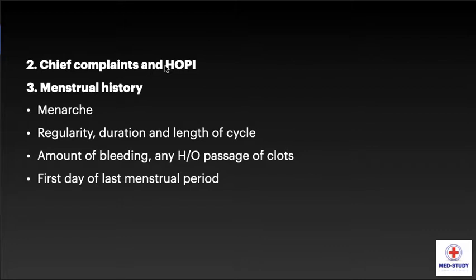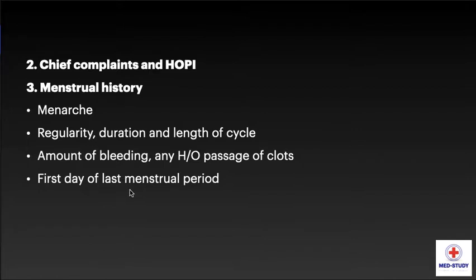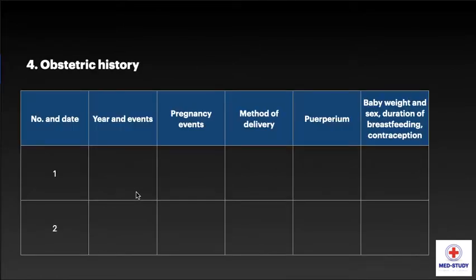Now going to menstrual history. First is menarche, that is the age of onset of menses. You have to know the regularity, duration, and length of the cycle, the amount of bleeding, any history of passage of clots, and the first day of the last menstrual period, that is LMP.